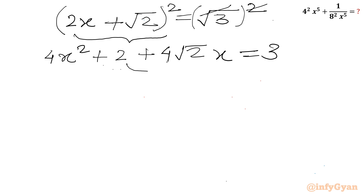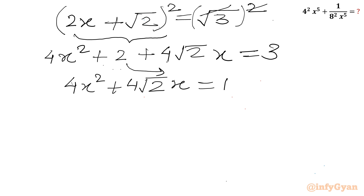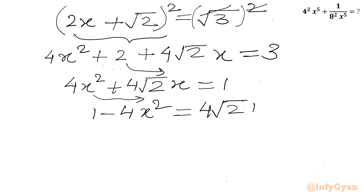Now taking the 2 to the RHS: 4x² + 4√2·x equal to 1. This will be equal to 4√2·x.